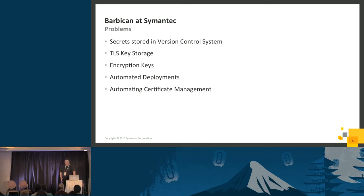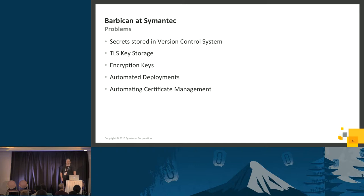Another problem is encryption keys — if you're doing per-object encryption, how do you handle the keys? Where do you securely store them until you need those objects again? On top of all those problems, automation is key. How do you enable automation in your deployments and deploy secrets like service account passwords in a machine-accessible form so a human doesn't have to go put them in?